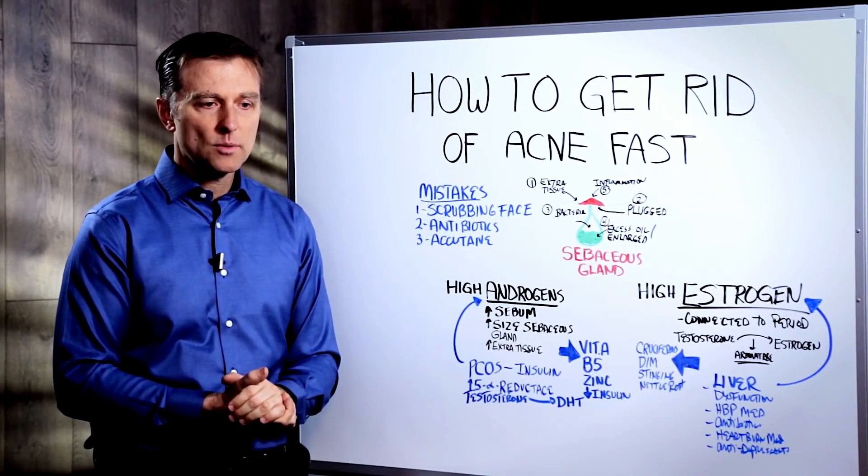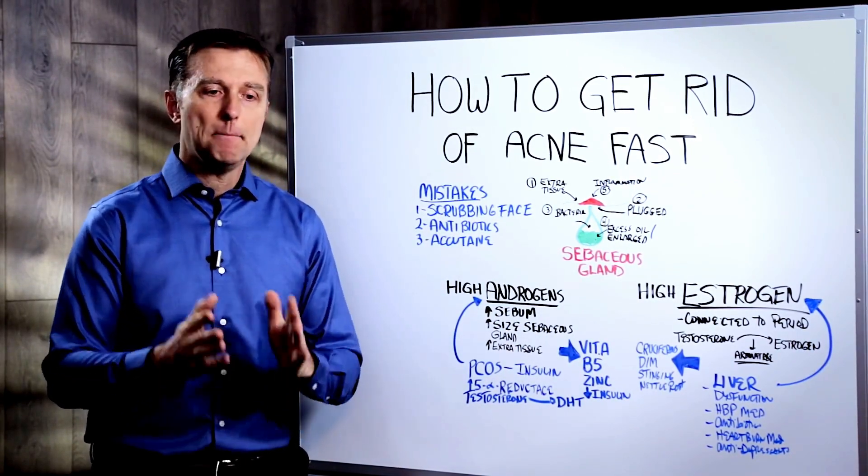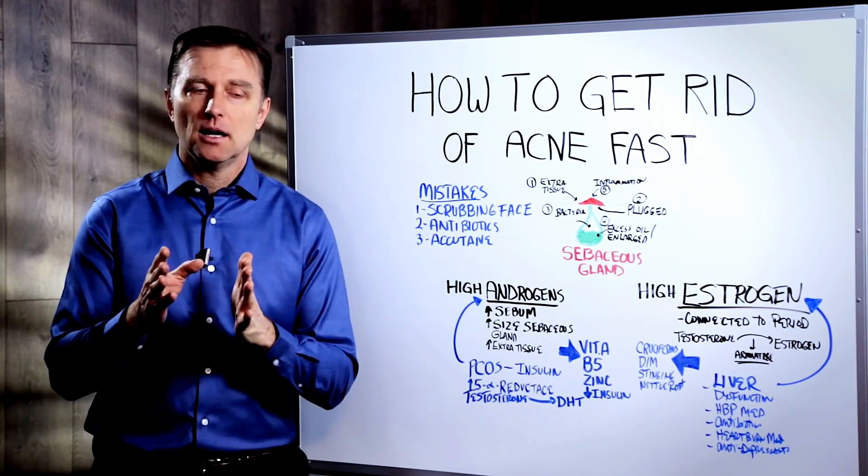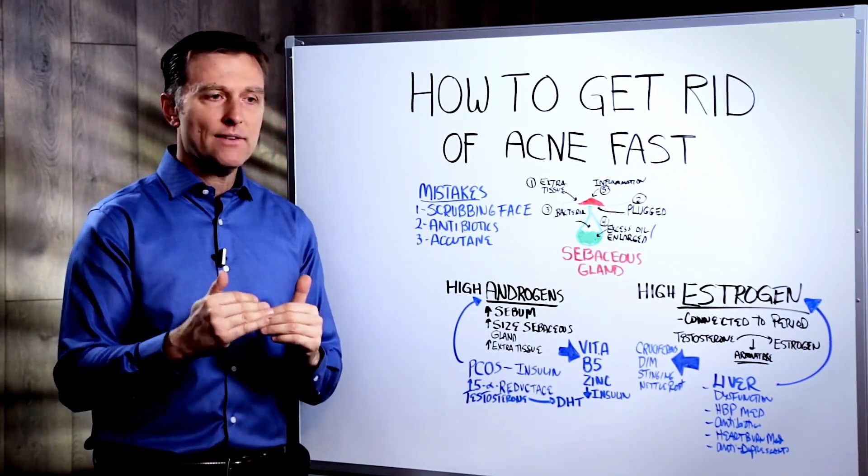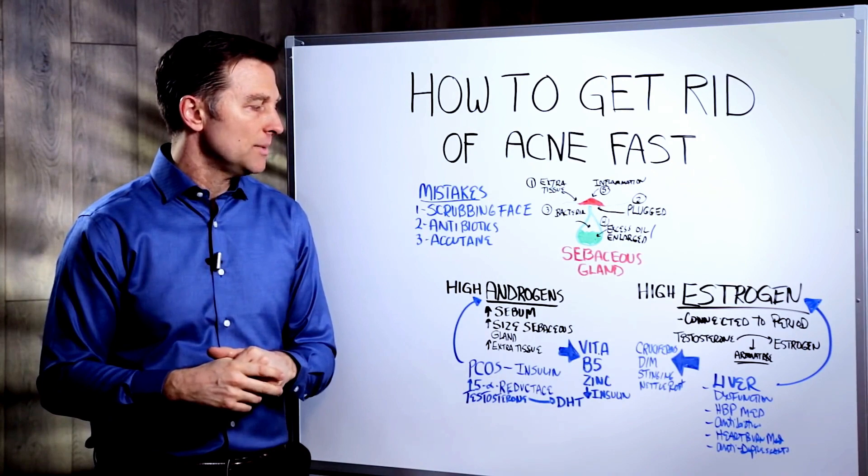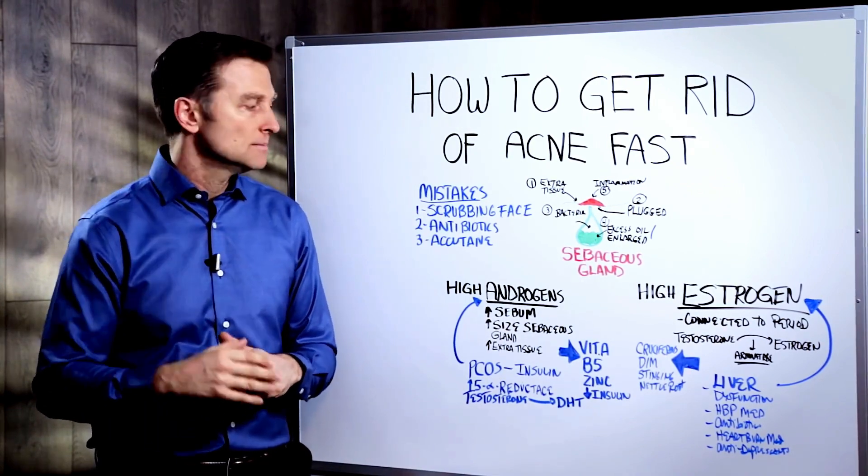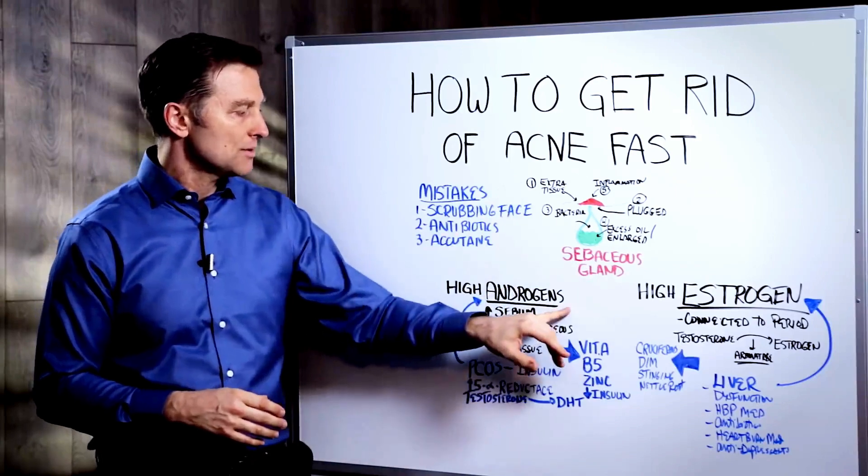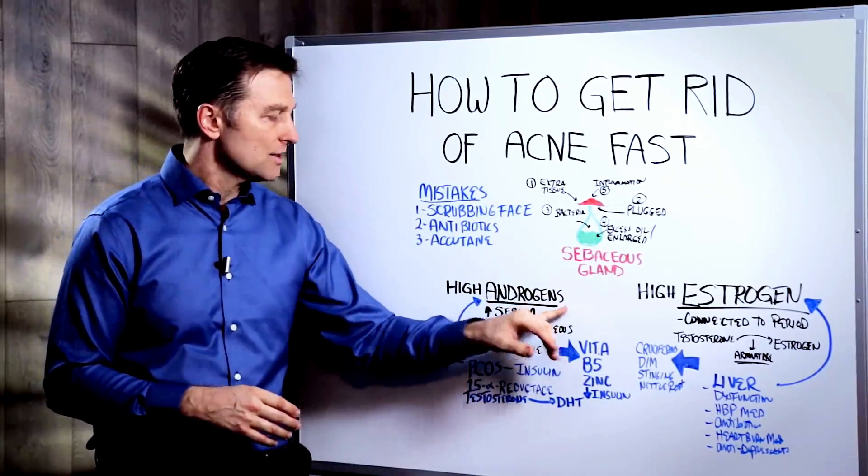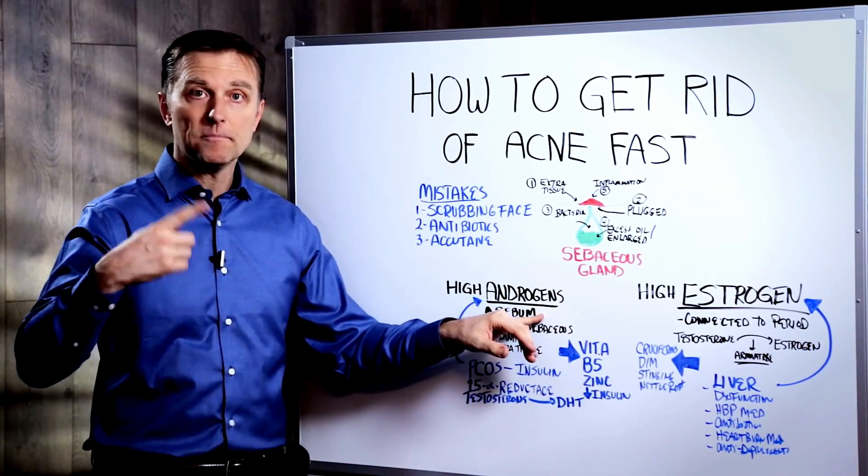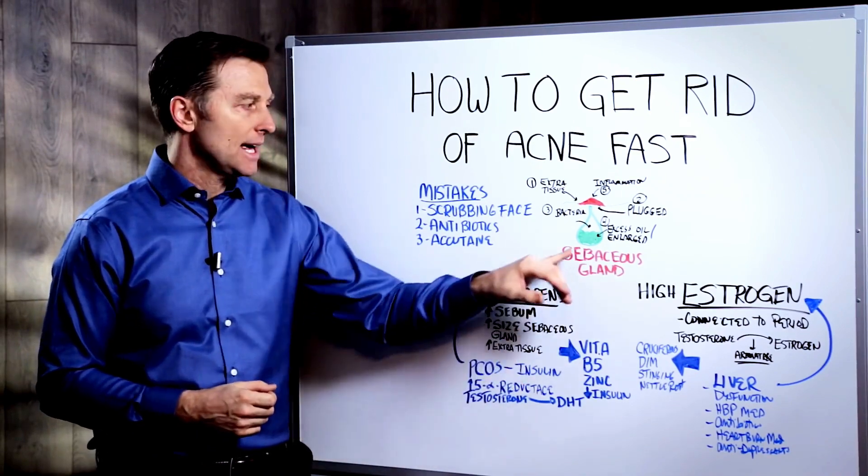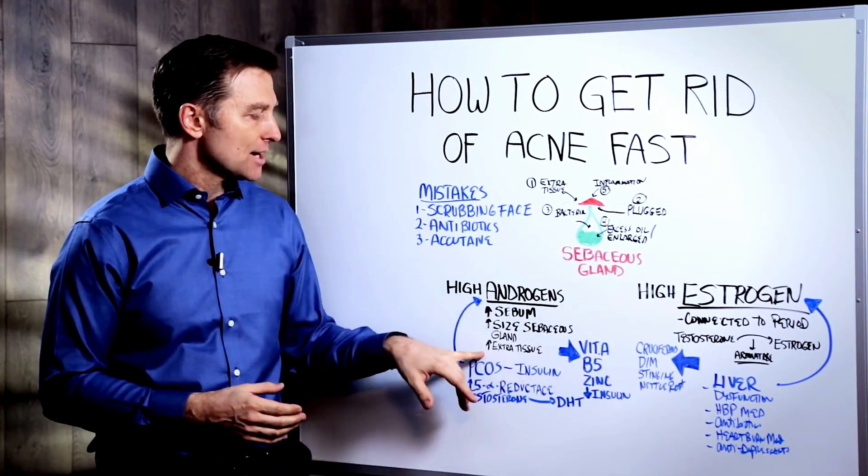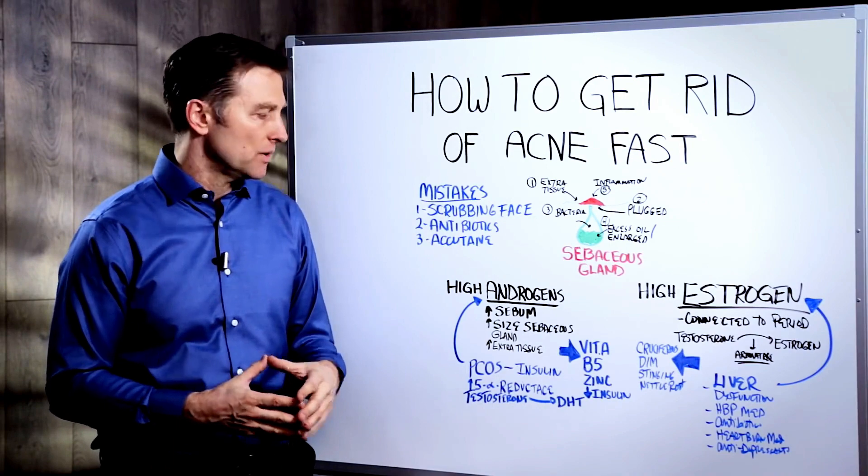Androgen, one form of androgen is called testosterone. Men and women have testosterone. Men have it in more amounts, larger amounts. Women do still have it in certain amounts. You need it, but if you're a female, you don't need much of it. But in this situation, you're pumping out too much, and too much androgen will increase the sebum, the oil, the size of the gland itself, and extra tissue. So that's really what it's doing.